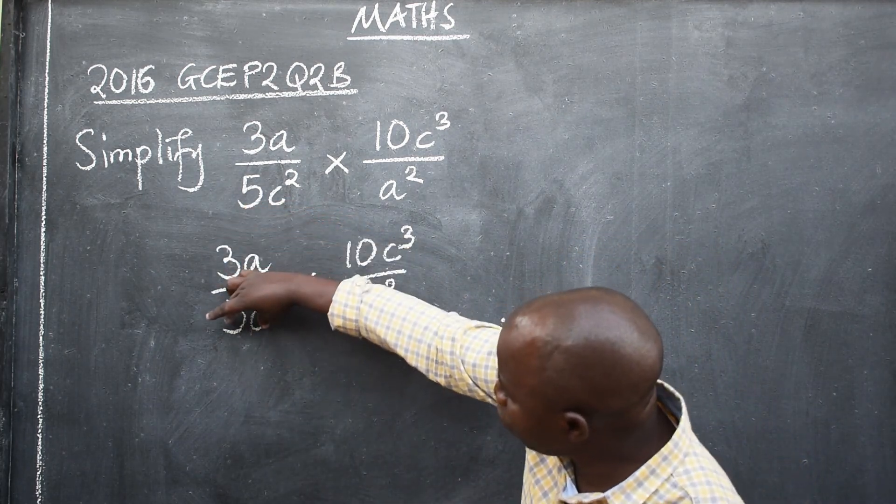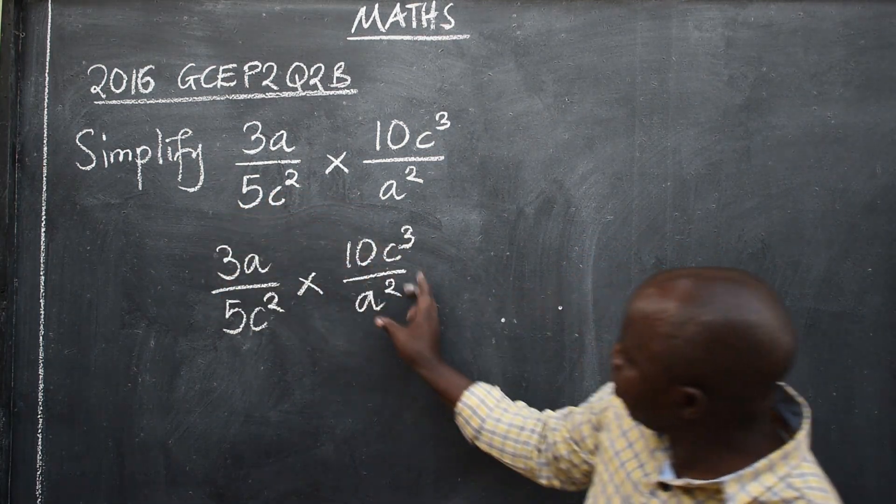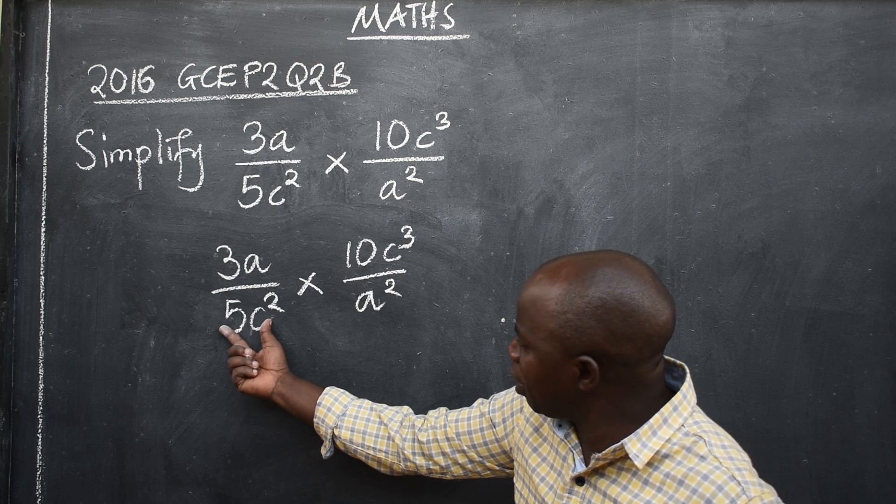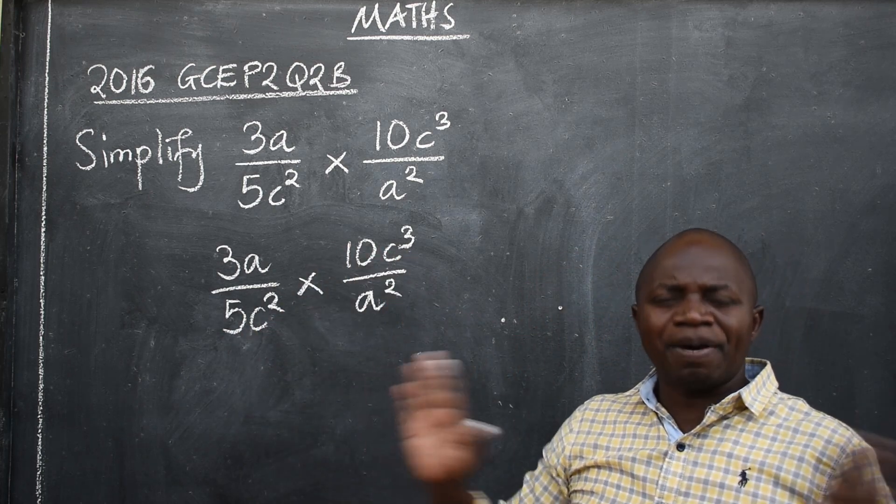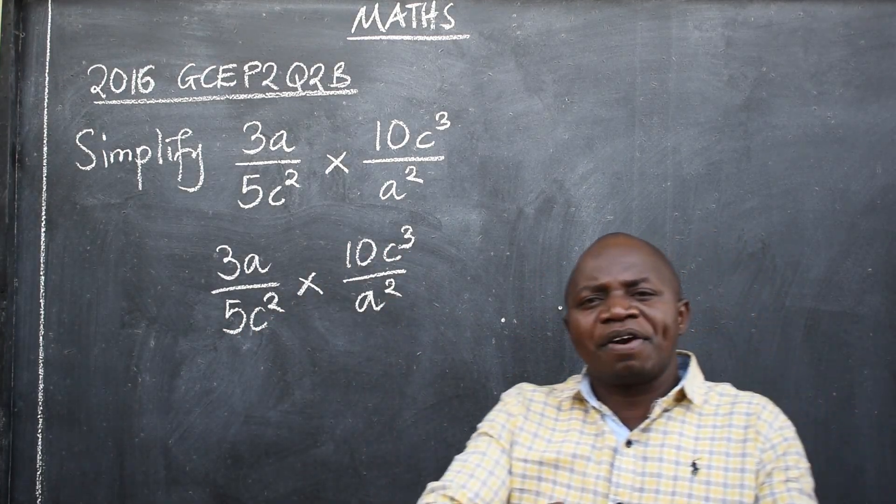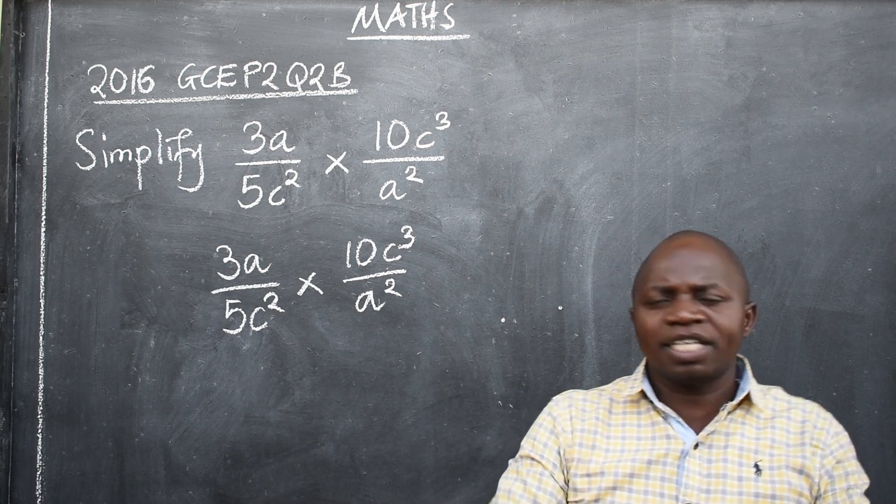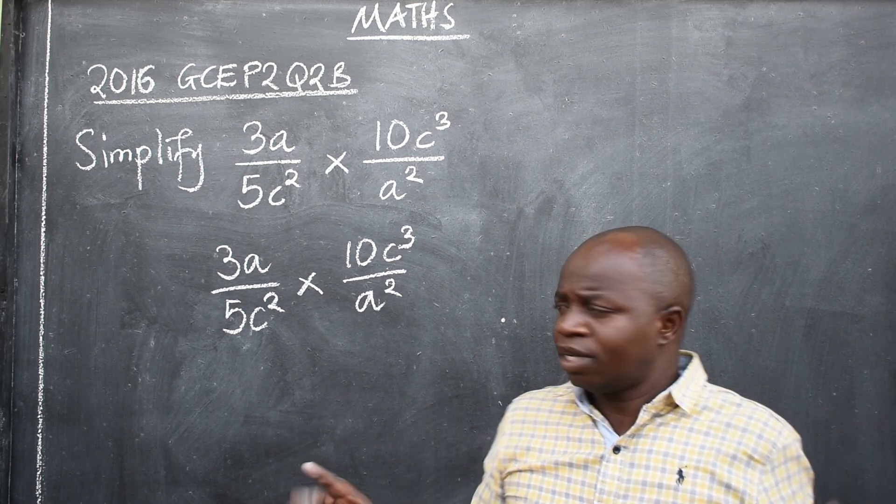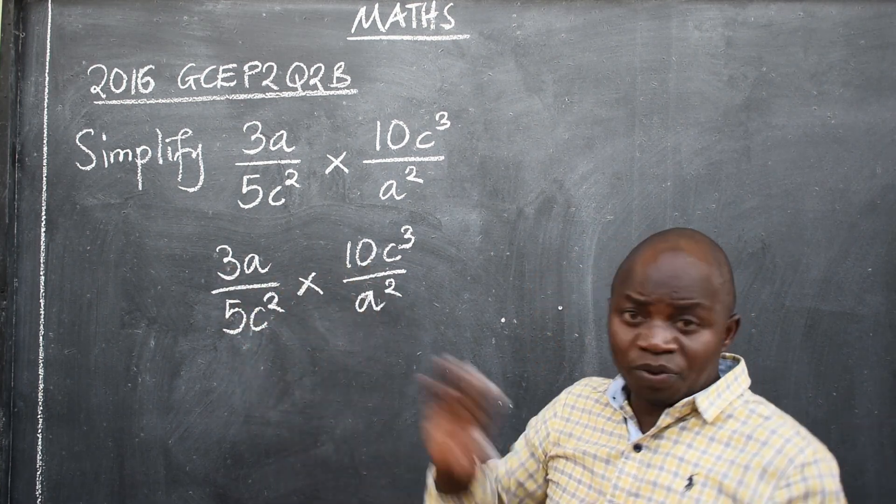So a numerator here, denominator, numerator here, denominator. Denominator here, numerator, you can reduce. But you cannot reduce numerator, numerator or denominator, denominator. We don't do that. You can't reduce like this. You can't.